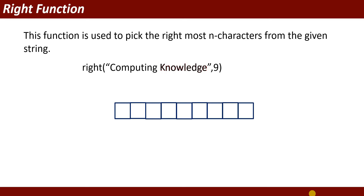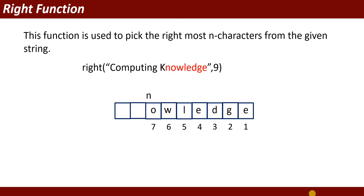Next is the Right function. This function is used to pick the rightmost N characters from a given string. You write the Right keyword, then give the string and the number of characters to pick from the right side. For example, with 9 characters from 'computing knowledge', it picks from the right: e, g, d, e, l, w, o, n, k — that is 'knowledge'.